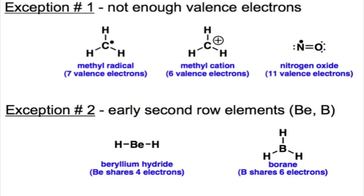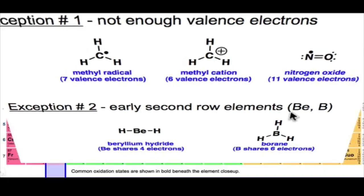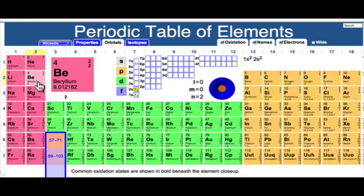The second exception involves atoms like beryllium and boron that lie to the center or the left of the periodic table. Here's a quick reminder of their positions. Beryllium is in the second row all the way over next to lithium. Boron is the first of the P-block elements in the second row.